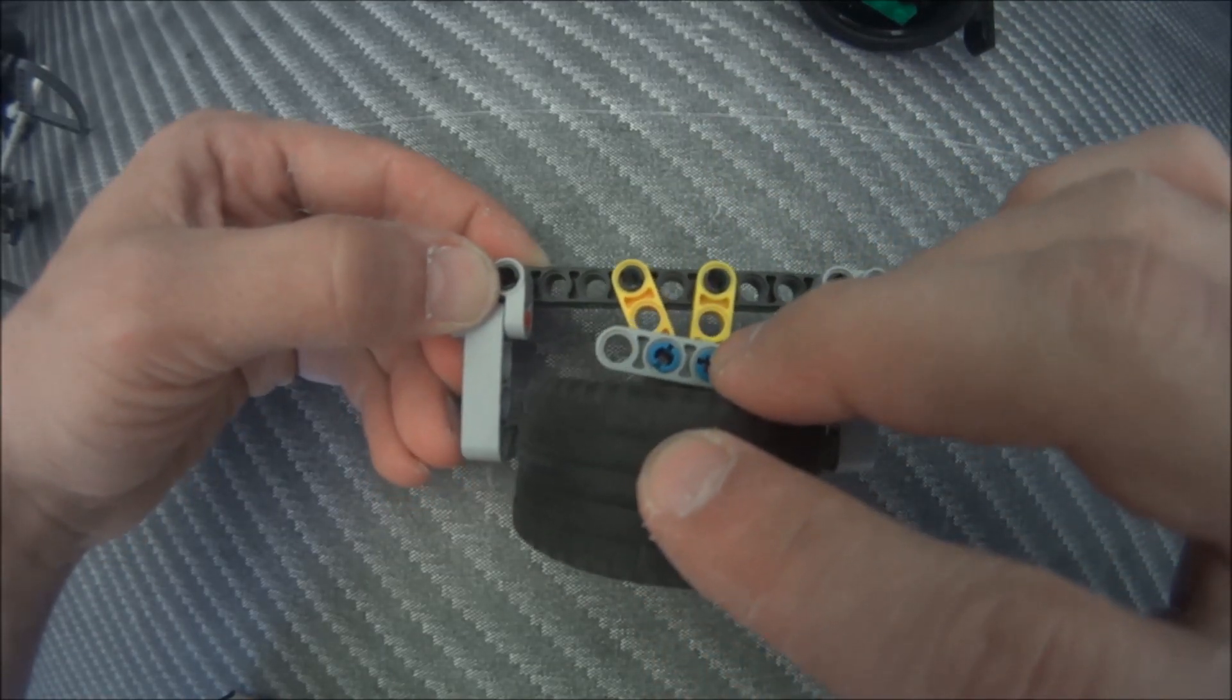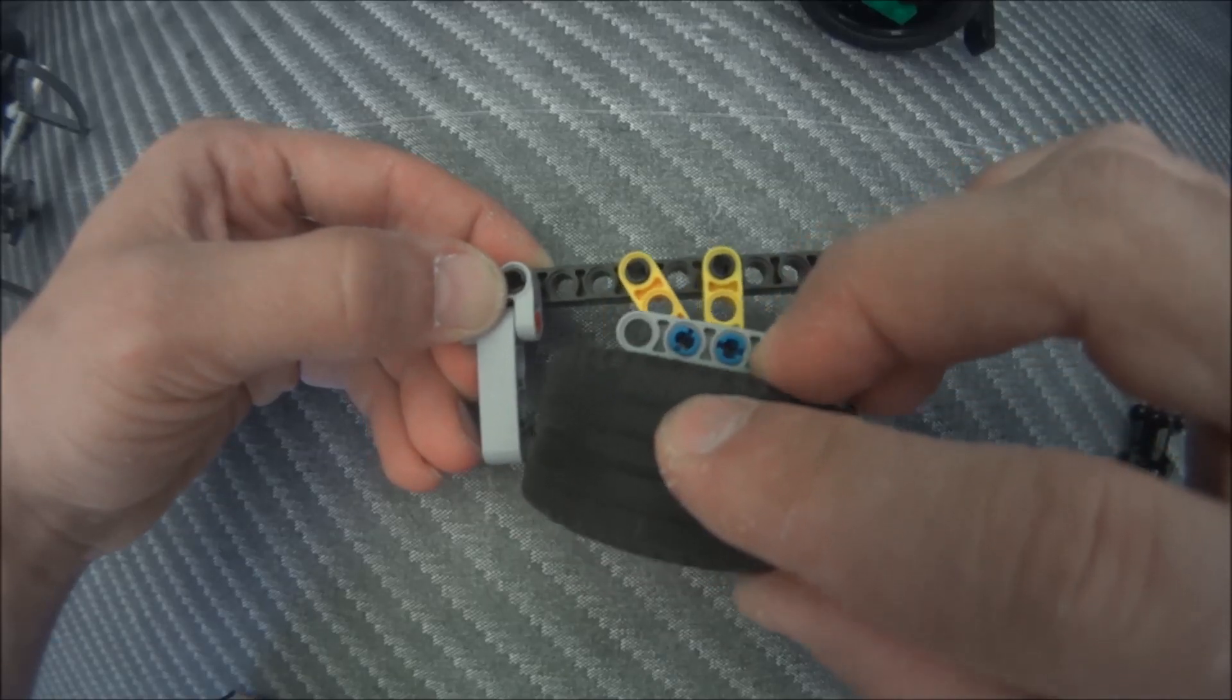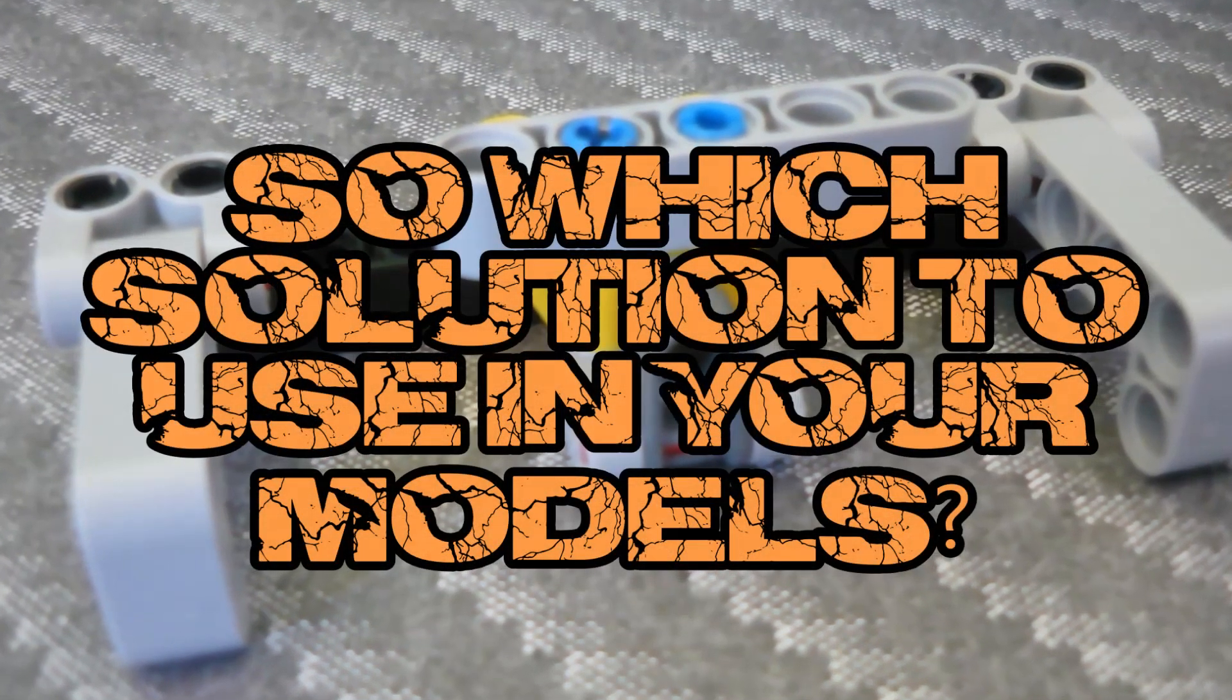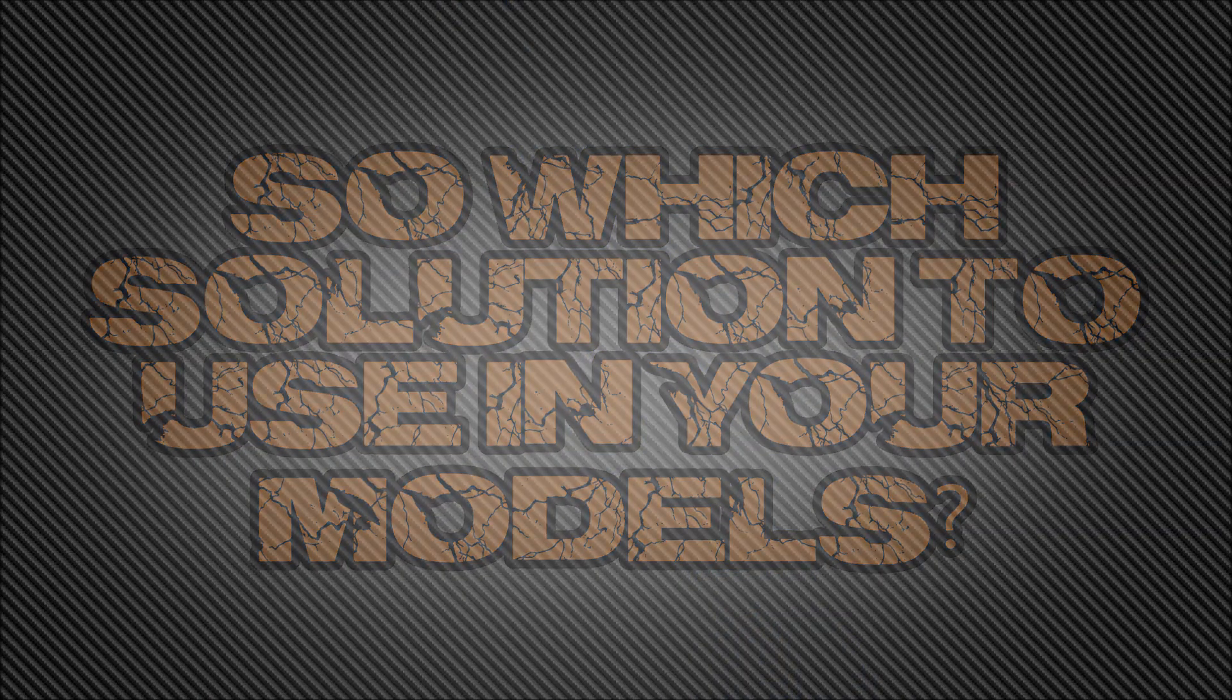The last solution, the one with the multiple linkages, allows you to steer in a much tighter space than other solutions, but it does make the suspension system quite complicated.